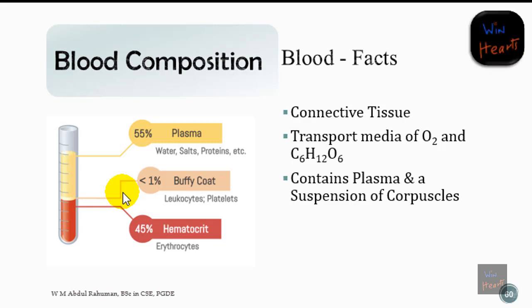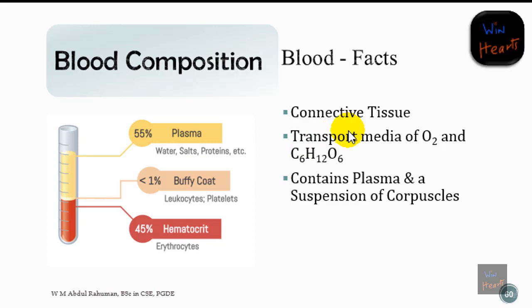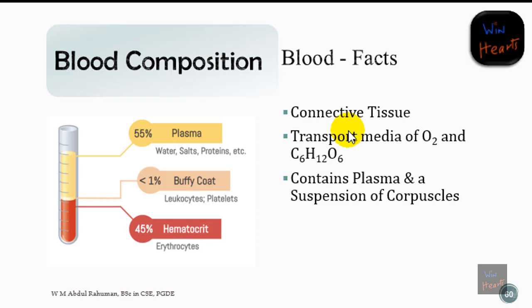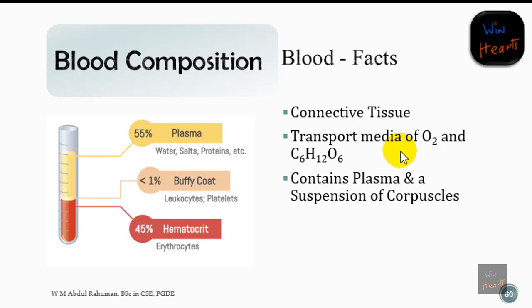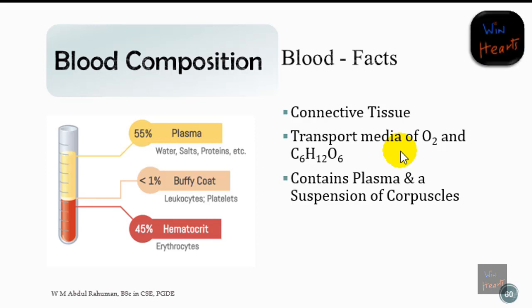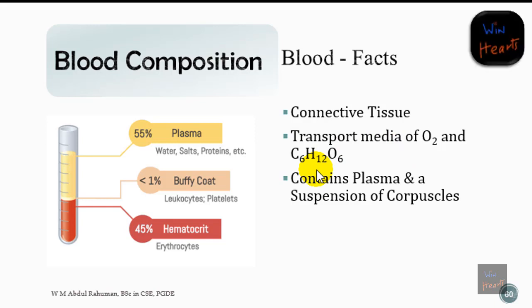Some facts we should know about blood: first, it is a connective tissue — it is not a muscle or a liquid, but rather a tissue. The special property of this tissue is that it is in a liquid format, so it is able to transport many materials in the body, especially respiratory substances such as oxygen and carbon dioxide, and the raw materials for respiration, which is glucose.